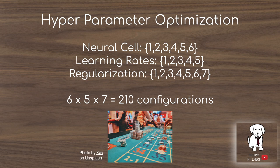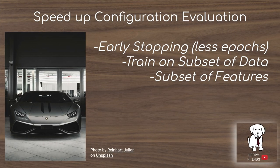The problem with evaluating all configurations is that training deep neural networks all the way to convergence typically takes a long time. So the idea of Hyperband is to speed up the evaluation of each configuration.